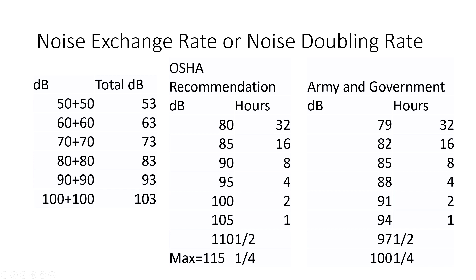OSHA has a slightly different recommendation — it uses 5 decibels as the exchange rate, which is a little more relaxed than the theoretical 3 dB. Someone can spend up to 8 hours at 90 decibels. If we double the noise according to OSHA, adding 5 decibels brings it to 95 decibels, and that person can only spend 4 hours. Reducing noise by half means 5 decibels less, so at 85 decibels under OSHA's recommendation, a person can spend up to 16 hours.